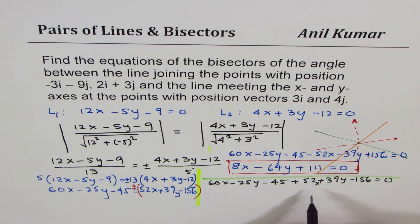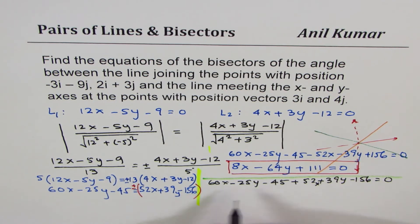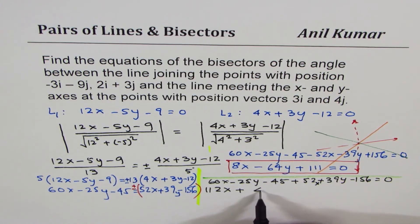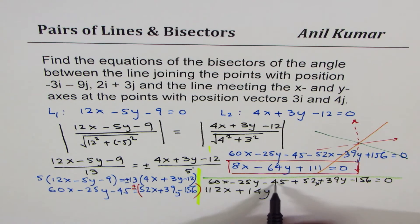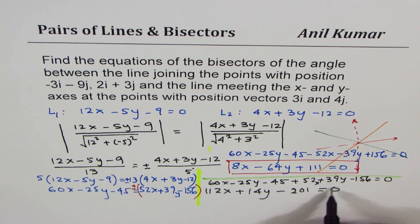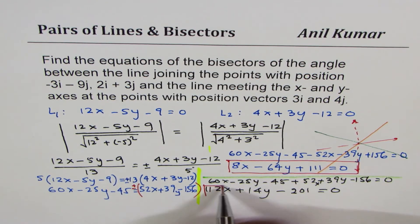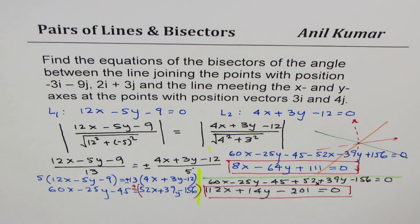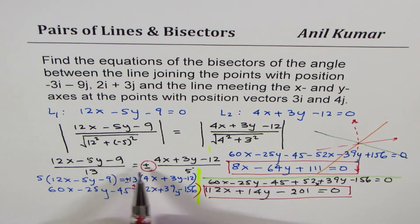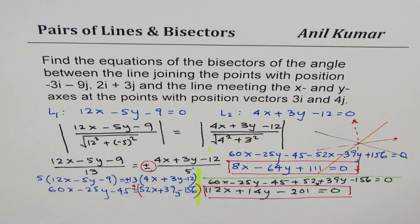For the negative case, adding 52x to 60x gives 112x. Taking 39y from 25y gives plus 14y. Adding 156 and 45 gives 201. So the second bisector equation is 112x plus 14y plus 201 equals 0. That gives us both bisectors. The key method is: equate both perpendicular distances, use plus and minus to get both equations, then solve. I hope that helps — feel free to post your comments and suggestions, and share my videos. Thank you and all the best.